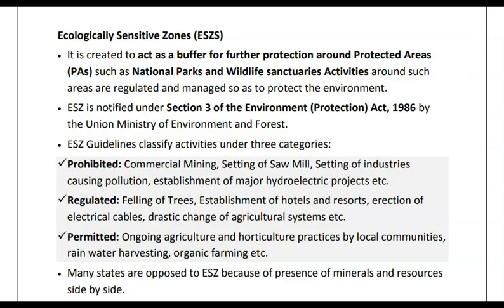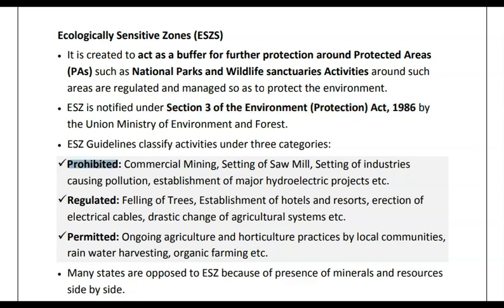The last topic is ecologically sensitive zones. Ecologically sensitive zones act as a buffer for the protection of protected areas such as national parks and wildlife sanctuaries — they are the buffer area around these parks before human settlements begin. It is notified under Section 3 of the Environment Protection Act 1986 and classifies activities into three categories. Prohibited activities include commercial mining, setting up of industries causing pollution, and establishment of major hydroelectric projects — these are totally prohibited in ecologically sensitive zones.